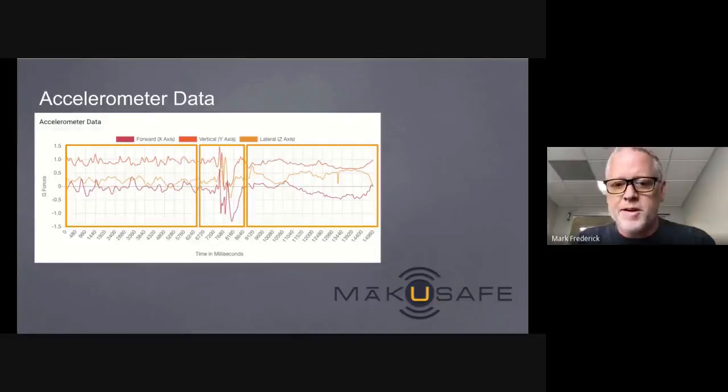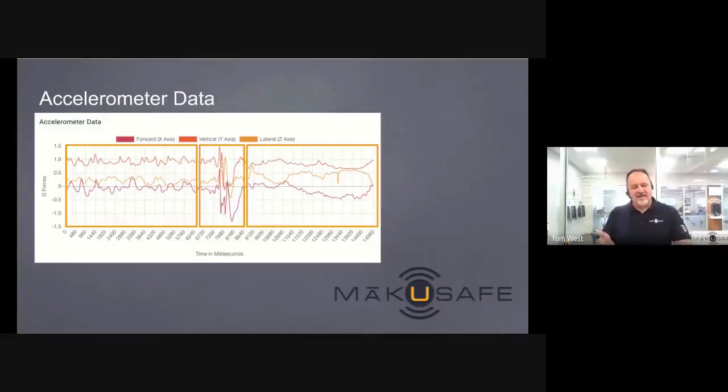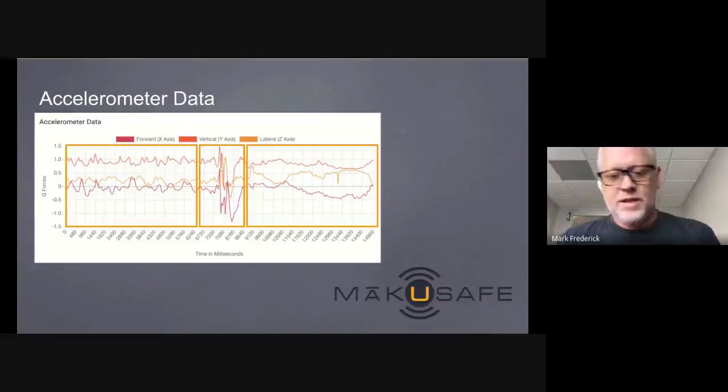Let's say someone on the front lines, a worker in a distribution center, is wearing our wearable armband device and they're on a forklift and they bump into a pillar or a racking system. That's not a slip or a trip or a fall, so what's going to happen there?